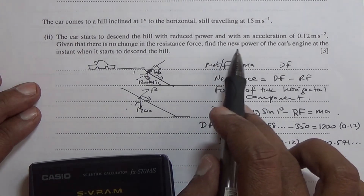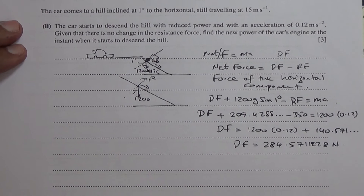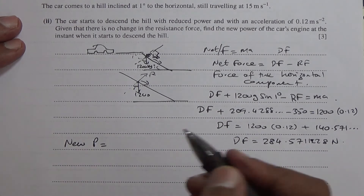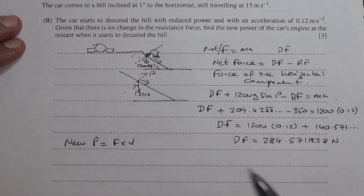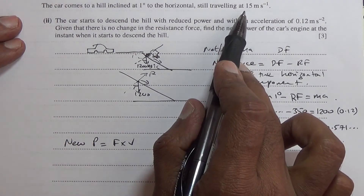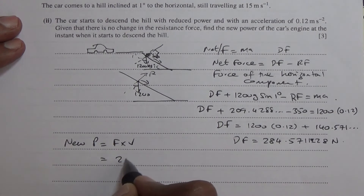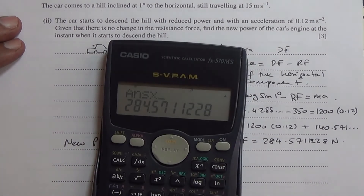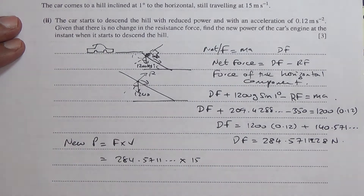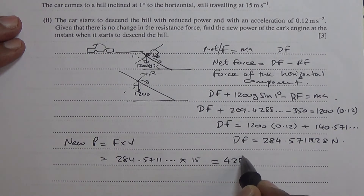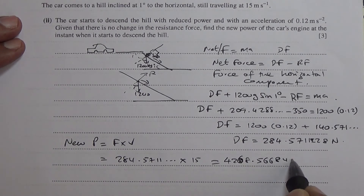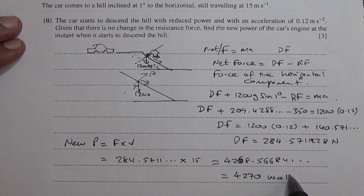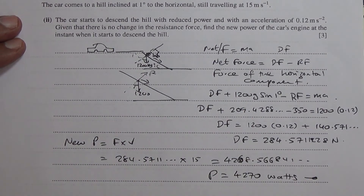What we are told to find is the new power. Power equals force multiplied by velocity. The speed of the car is still 15 meters per second. So we take 284.5711 and multiply by 15. That gives 4,268.57, which rounds to 4,270 watts to 3 significant figures. So that's the new power of the car when it's descending the hill. Second part done.